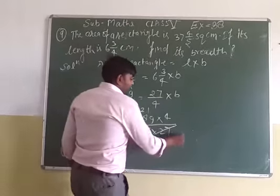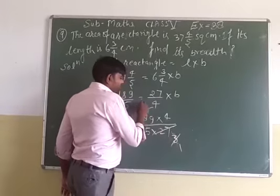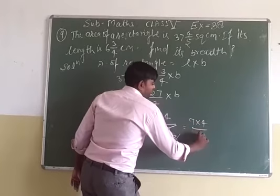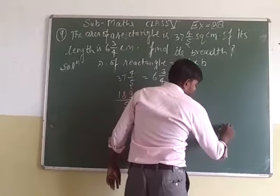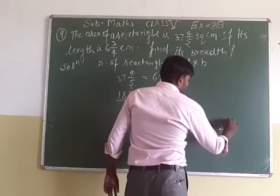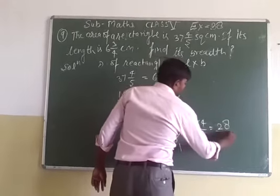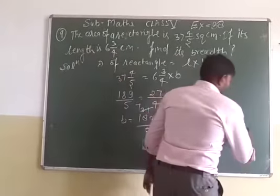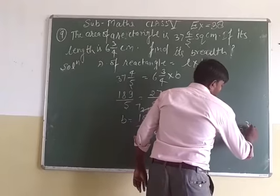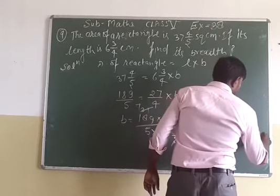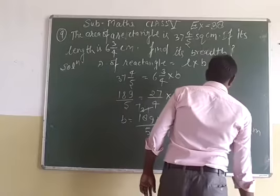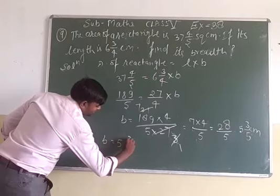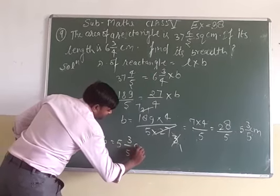That's okay. Then dividing by 3: 3 ones are 3, 3 sevens are 21. So you get 7 multiplied by 4 upon 5, which is 28 upon 5. Dividing: 5 into 28 gives 5 whole 3 upon 5 centimeters. So your answer — breadth B equals 5 whole 3 upon 5 centimeters.